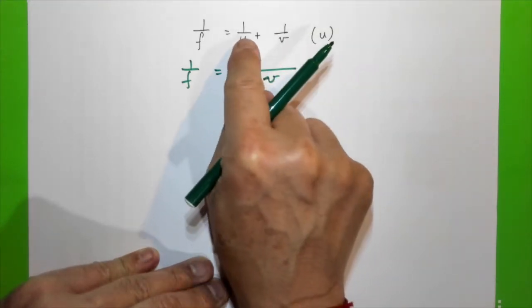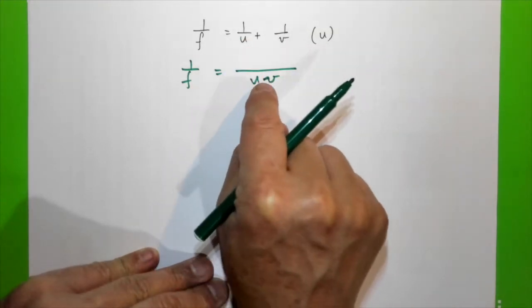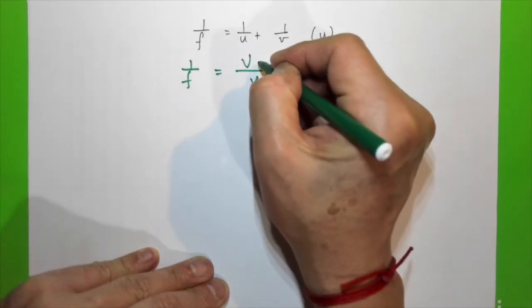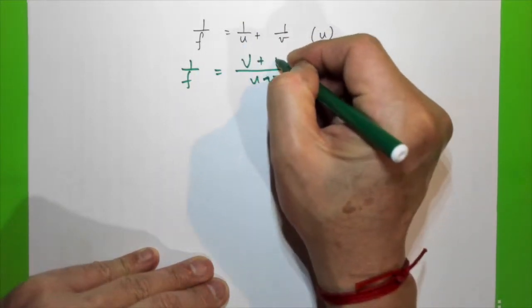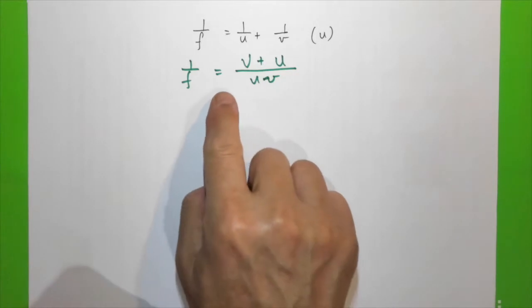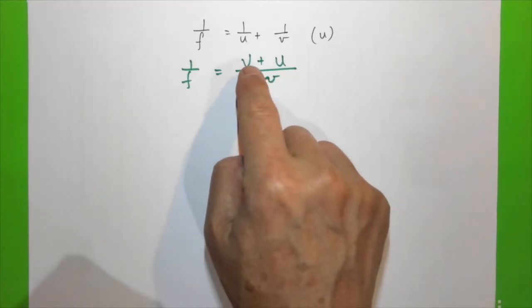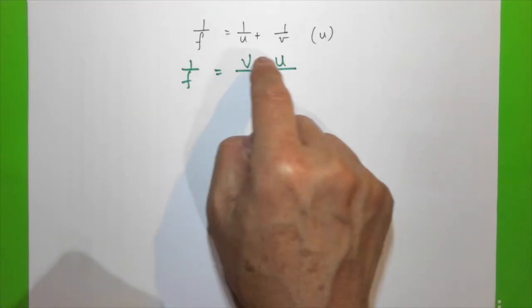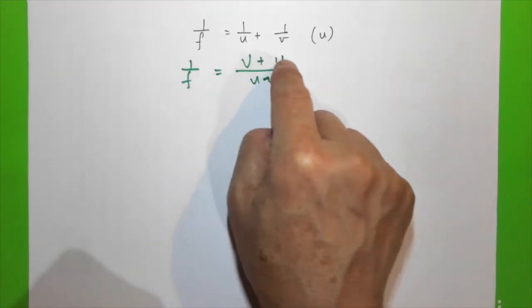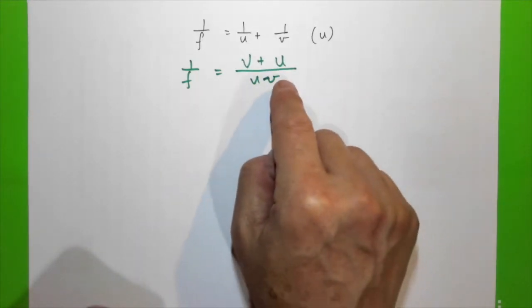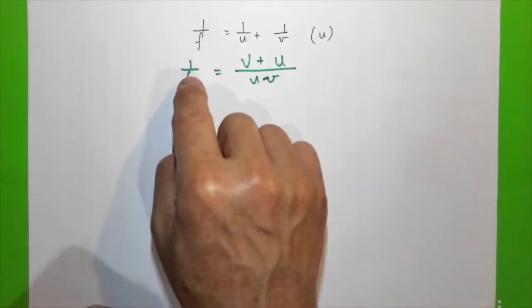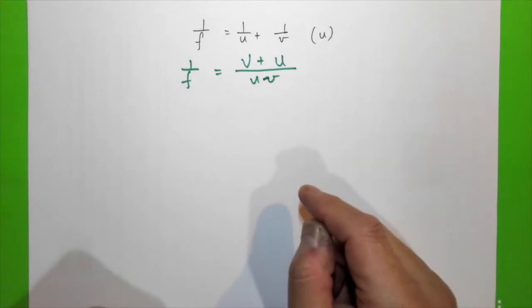Because we want it over uv, the numerator becomes v + u. Now that we have uv and u + v, we can rearrange this equation so that u is the subject.